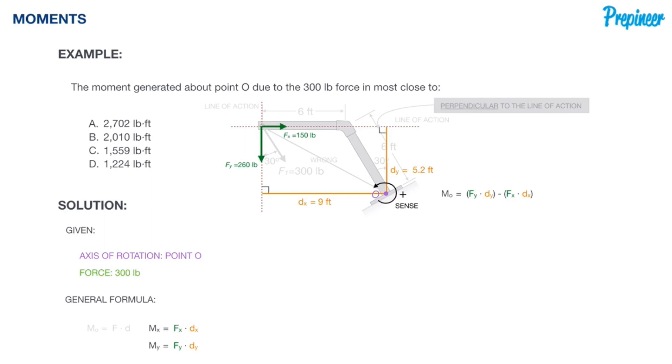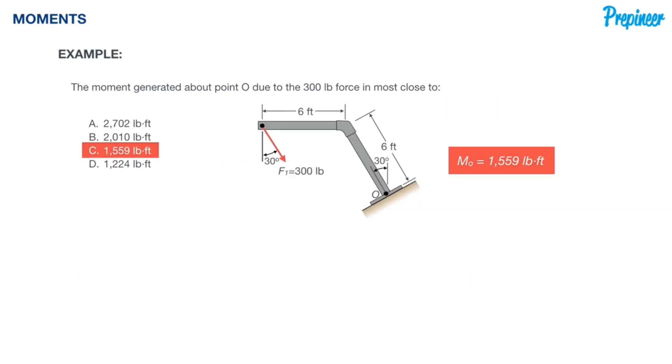So we do just that. We got 260 pounds times nine feet minus 150 pounds times 5.2 feet. And we conclude that the moment about 0.0, our summed moment, is 1,559 pound-foot. So the correct answer here is C, 1,559 pound-foot.